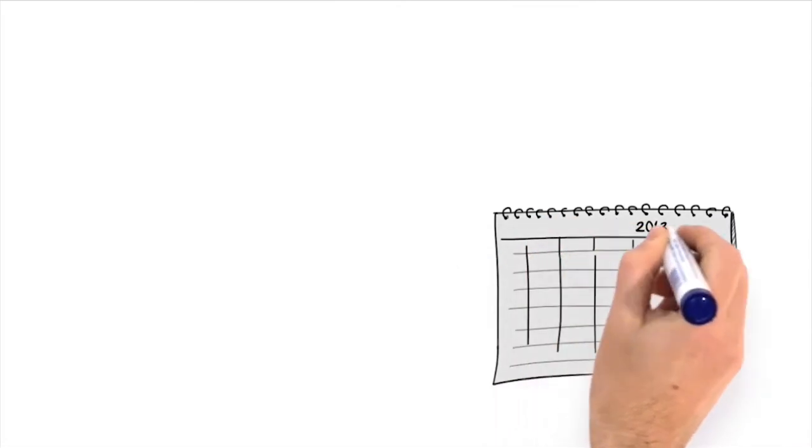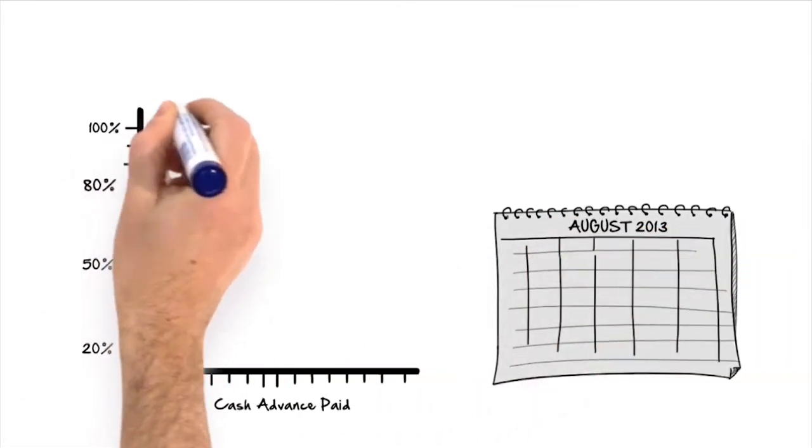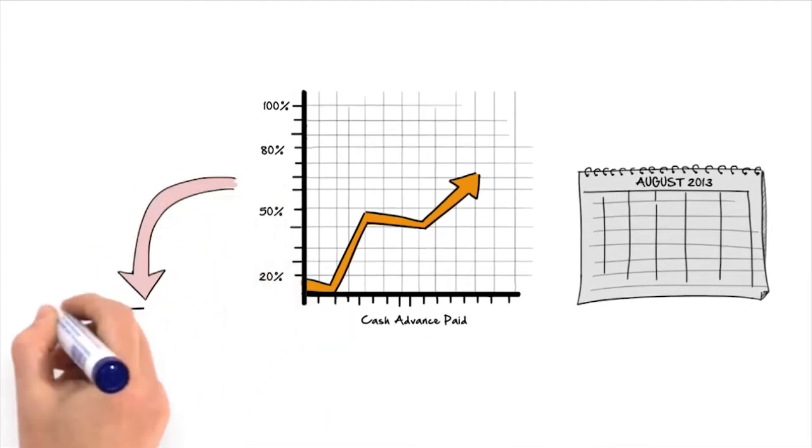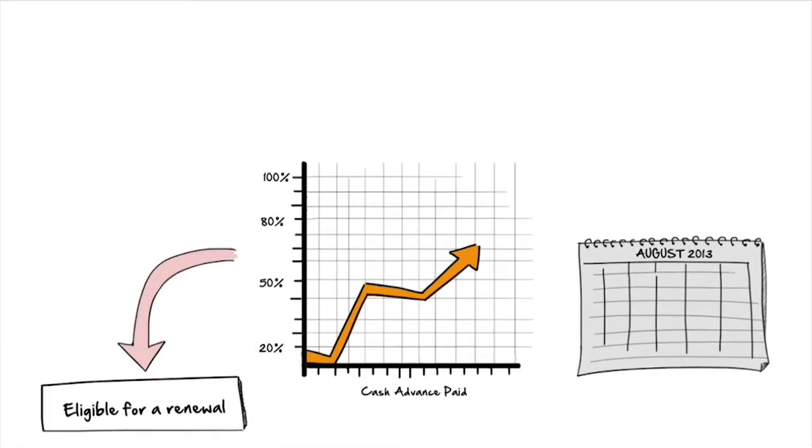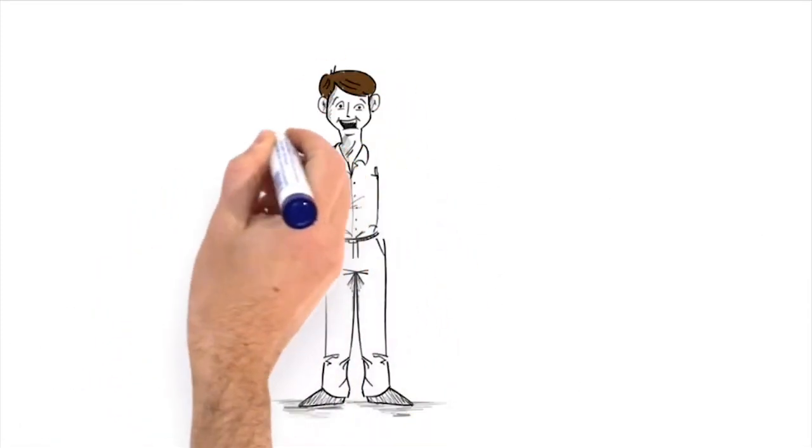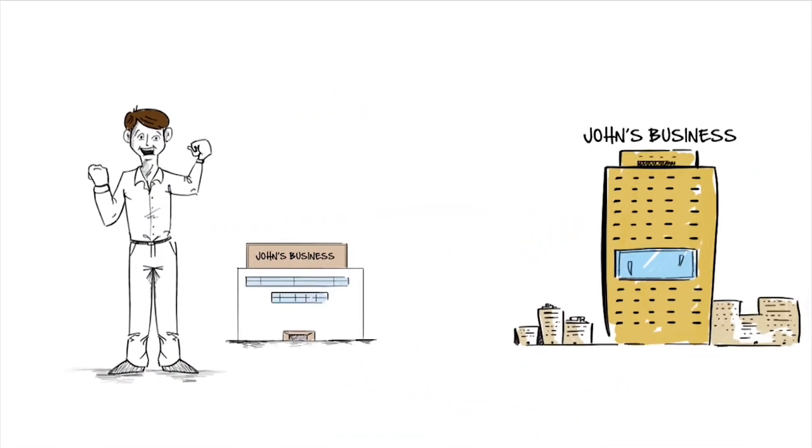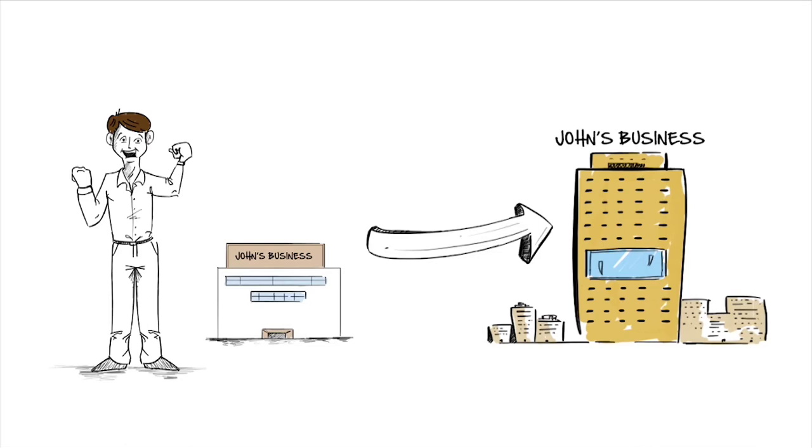After three months, John was notified he had paid a large percentage of his cash advance and he was eligible for a renewal. John is very excited and will be using the renewal advance for renovation thanks to his new friends, The Funding Tree.